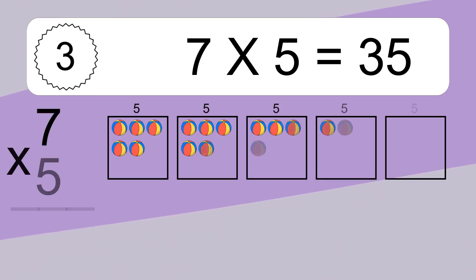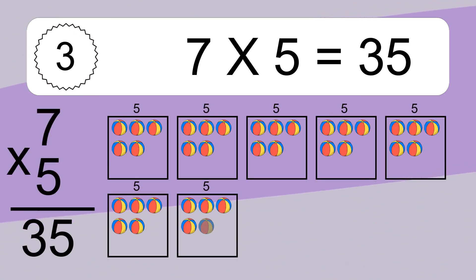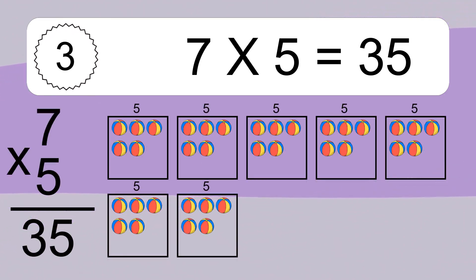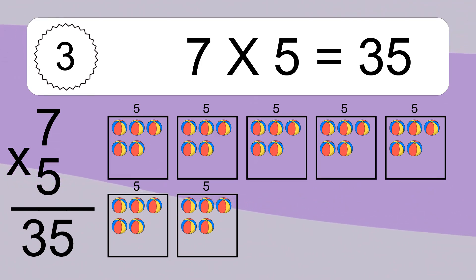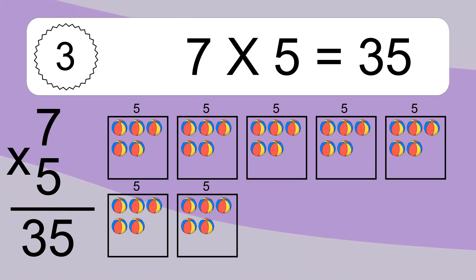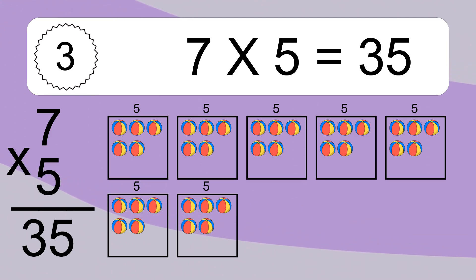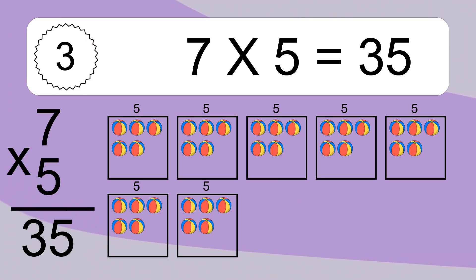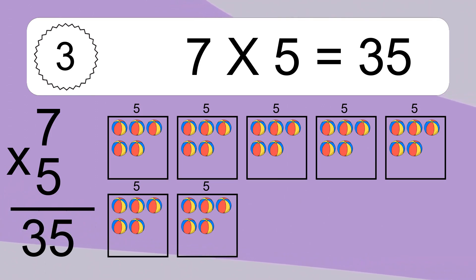Seven times five equals what? Seven times five equals thirty-five. We have seven boxes, and each box has five colorful balls inside. If you count all the balls in all the boxes together, you will have seven times five balls. This equals thirty-five balls.